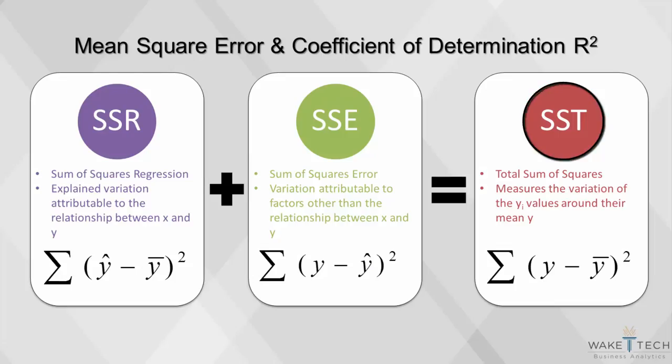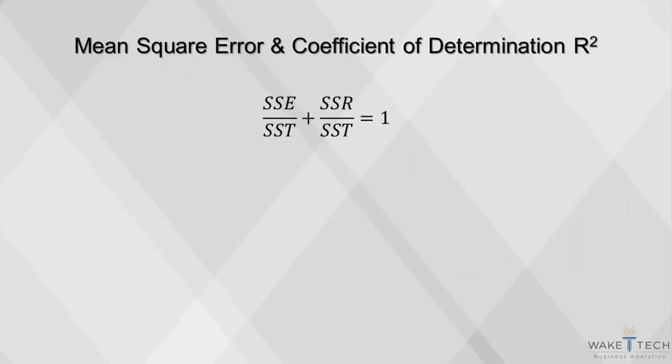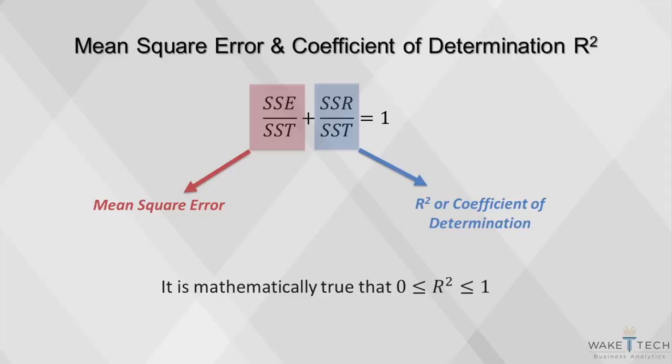So given that total variation SST is the sum of explained and unexplained variation, we can divide through by the total sum of squares SST to get the ratios equal to 1. The ratio of error sum of squares over total sum of squares plus the ratio of regression sum of squares over total sum of squares equals 1. Either of these two ratios can be used to measure our model fit. Error sum of square ratio is called the mean square error. We want to choose models with the lowest mean square error. Regression sum of square ratio is called r squared, or the coefficient of determination. We choose a model with the highest r squared. Because r squared plus mean square error equals 1, it has to be true that r squared, our coefficient of determination, has to lie between 0 and 1.